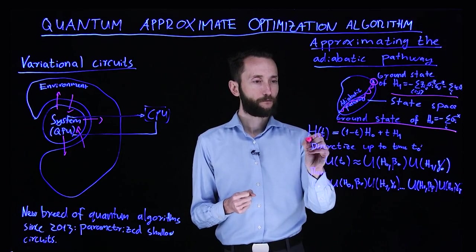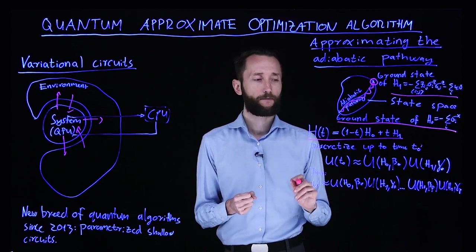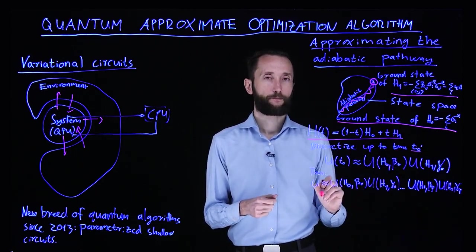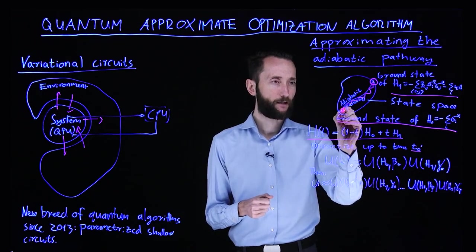We have this transition that we want to approximate—this time-evolving Hamiltonian up to some time t₀. We could approximate it in two steps.